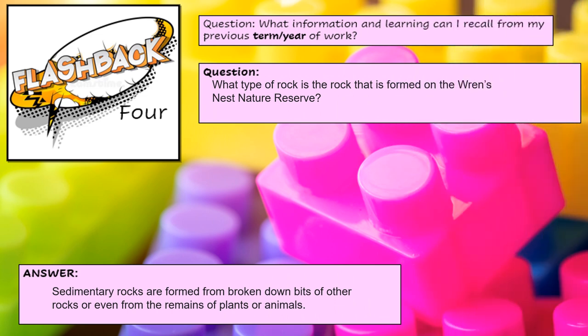The new unit in our curriculum afternoons is going to be all about rocks and soils. Last year we looked at Wren's Nest Nature Reserve and what types of rocks were formed there. The children should know that it's sedimentary rocks — formed from broken-down little bits of rock and the remains of plants and animals, set down in layers.